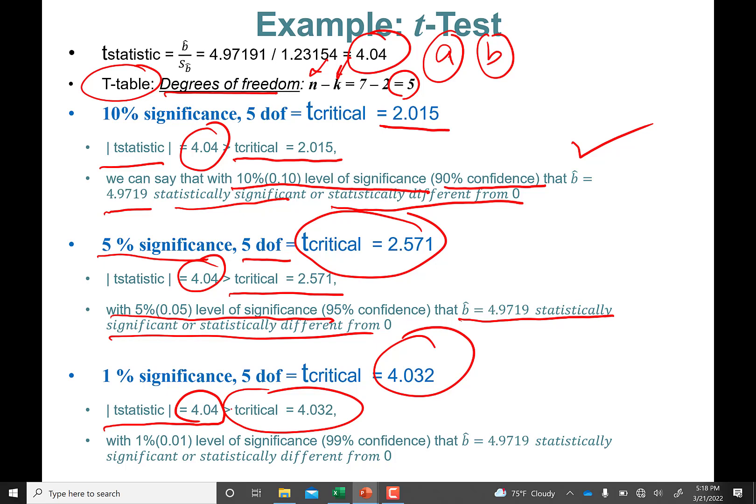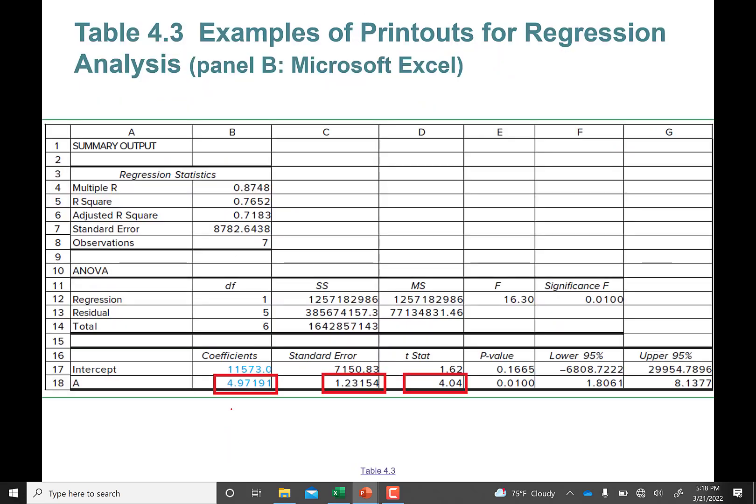You can say with 1% level of significance, or you say statistically significant at the 1% level, right? That beta hat is statistically different from zero. So all these numbers are already in Excel printed out: standard error, t-stat.